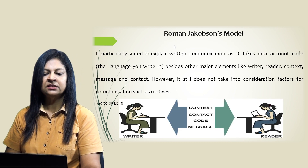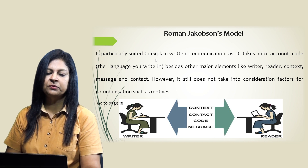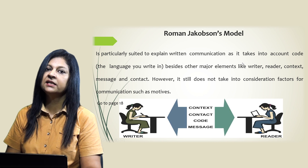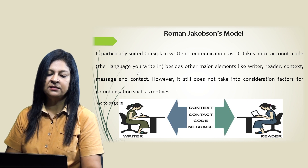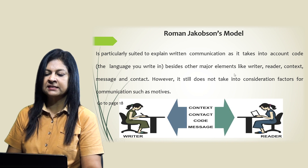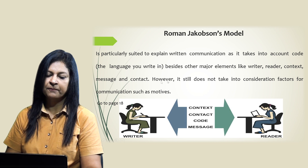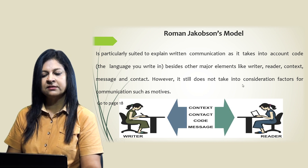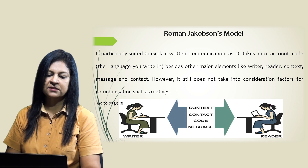Roman Jakobson's Model is particularly suited to explain written communication, as it takes into account code — the language you write in — besides the other major elements like writer, reader, context, message and content. However, it does not take into consideration factors for communication such as motifs.